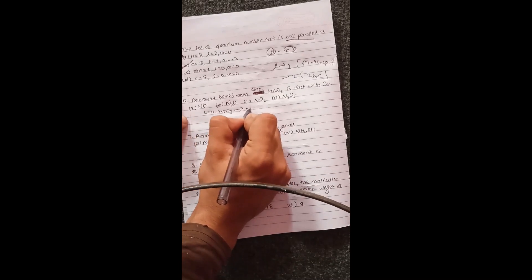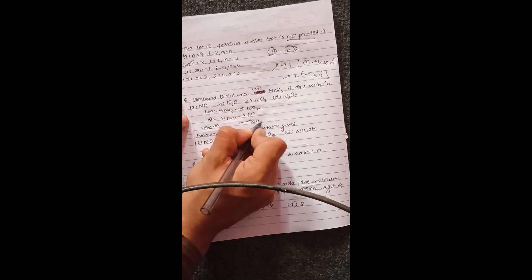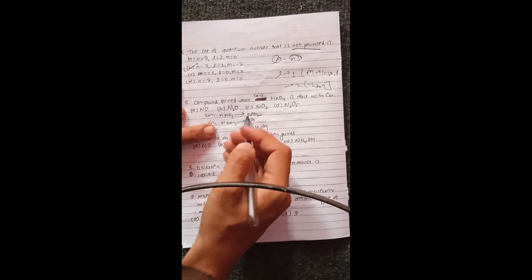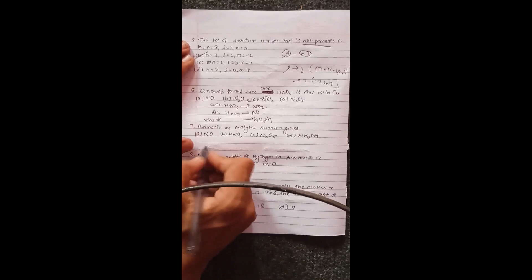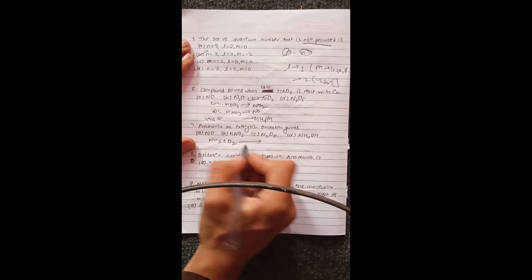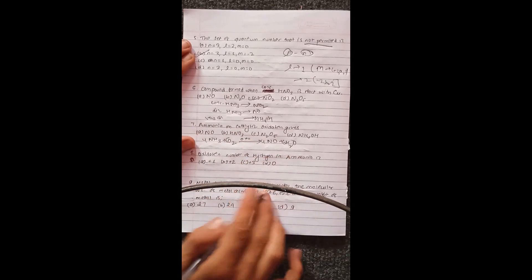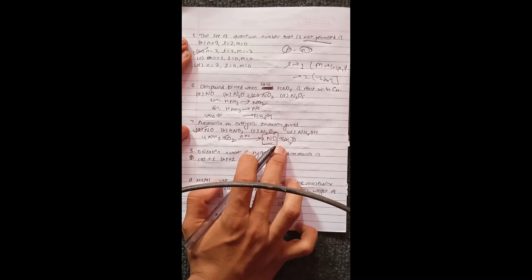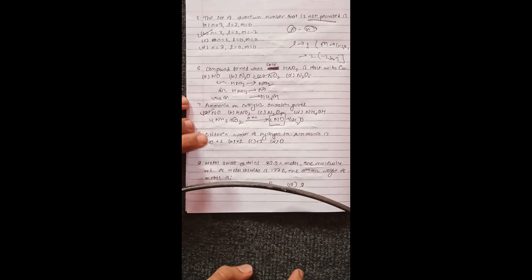Question six. The compound formed when concentrated HNO3 reacts — concentrated HNO3 reaction. Also, dilute HNO3 gives different products. Ammonia and catalytic oxidation: NH3 plus O2 undergoes catalytic oxidation. The process gives NO, which further oxidizes. This is the contact process: SO2 is oxidized over a catalyst to SO3.